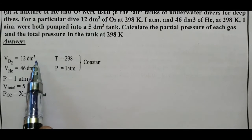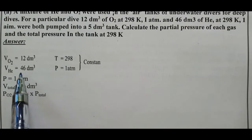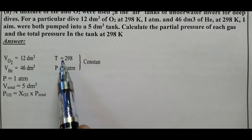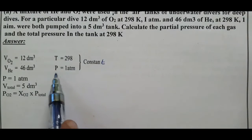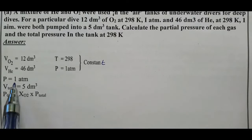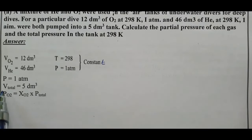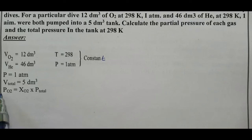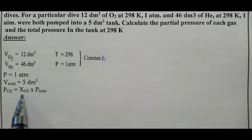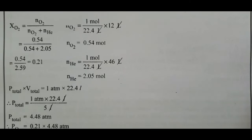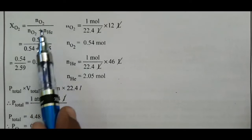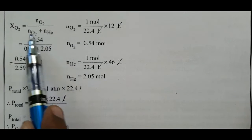Given: Volume of O2 = 12 dm³, Volume of He = 46 dm³. Temperature and pressure are constant (P = 1 atm). Total volume of tank = 5 dm³. Partial pressure of O2 = mole fraction of O2 × total pressure. Mole fraction of O2 = number of moles of O2 divided by total number of moles.